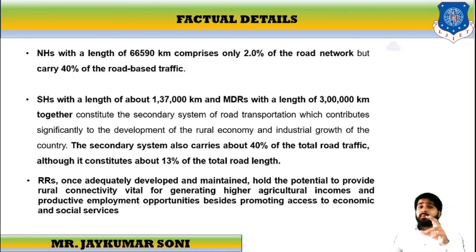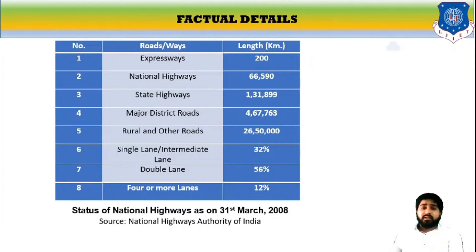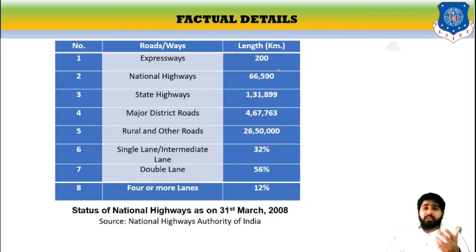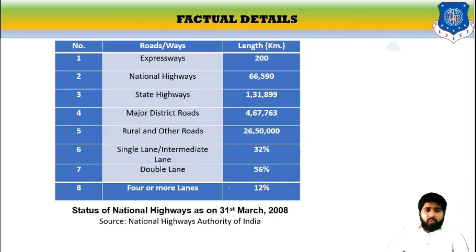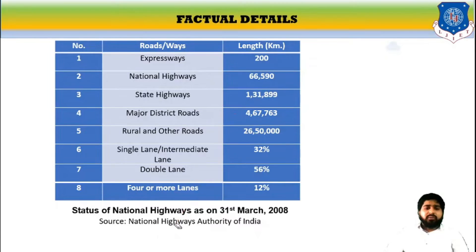Proper development of rural roads can give enormous benefits. As per data of 31st March 2008 provided by the National Highway Authority of India and NGI: there are 200 km of expressways, 67,000 km of national highway, 1,30,000 km of state highway, 4,65,000 km of major district road, and 26,50,000 km of rural roads. Single-lane roads have a 32% contribution, double lanes 56%, and roads with 4 or more lanes contribute about 12%. These are old but reliable details, with NGI as the source.